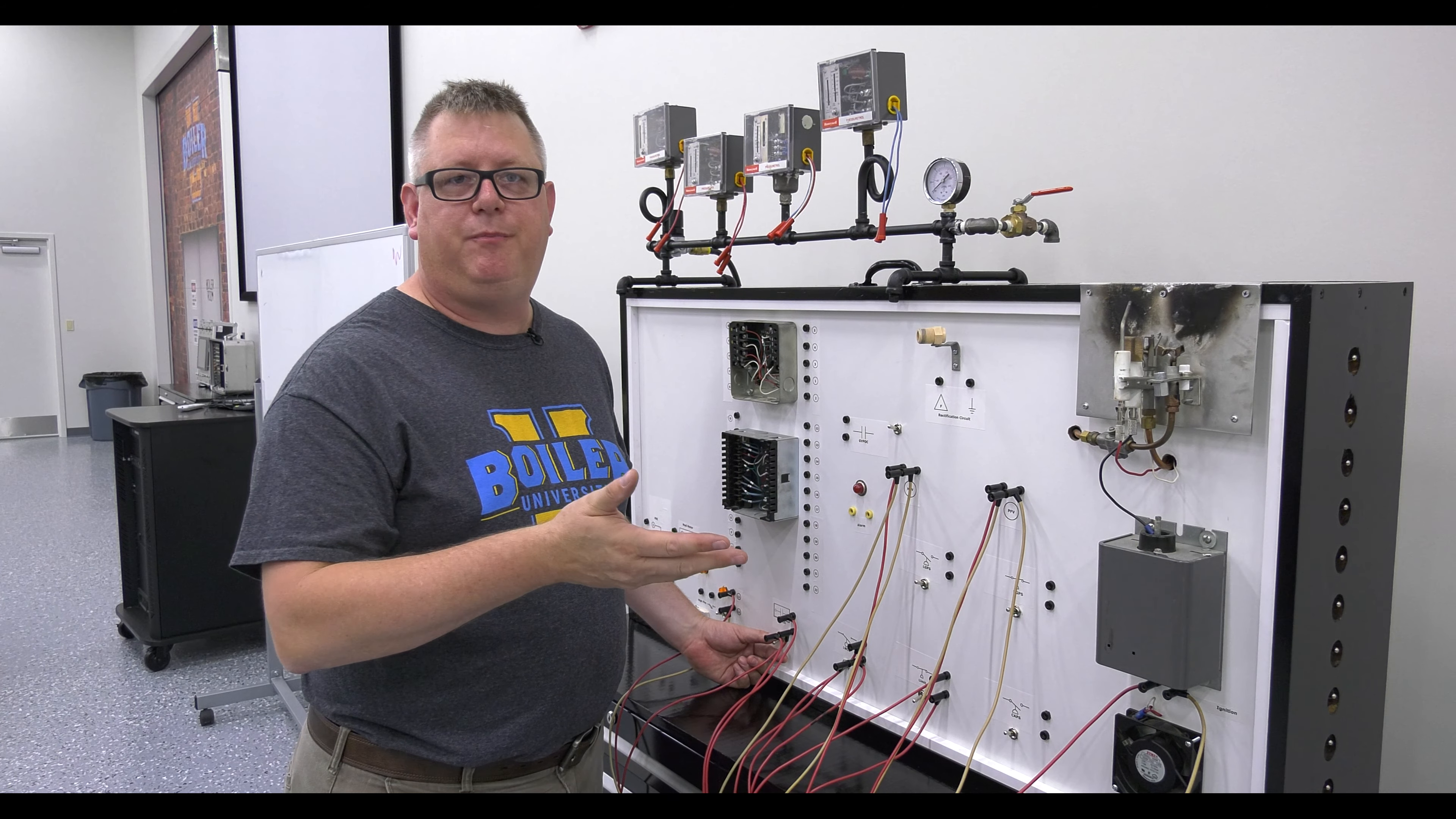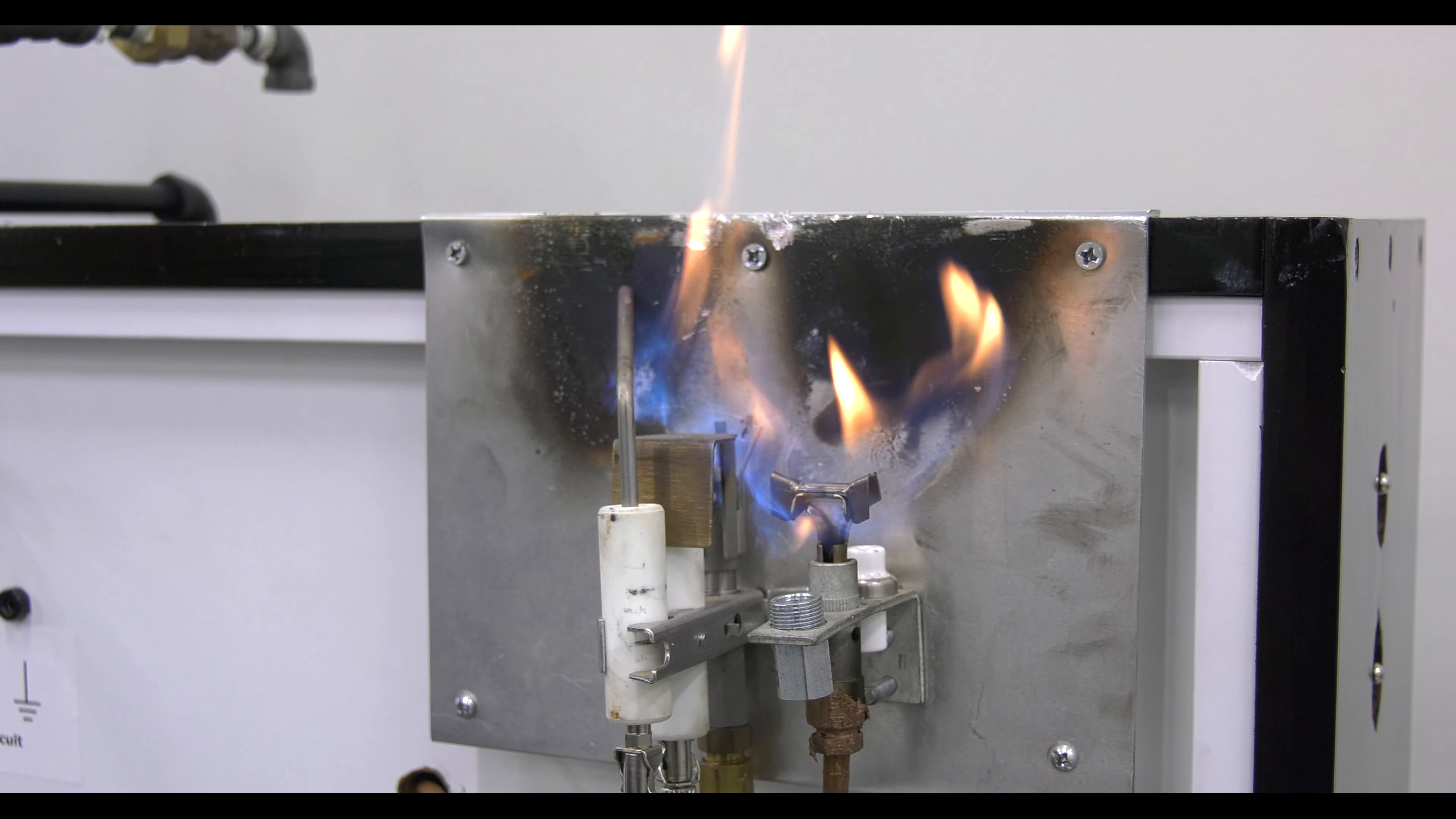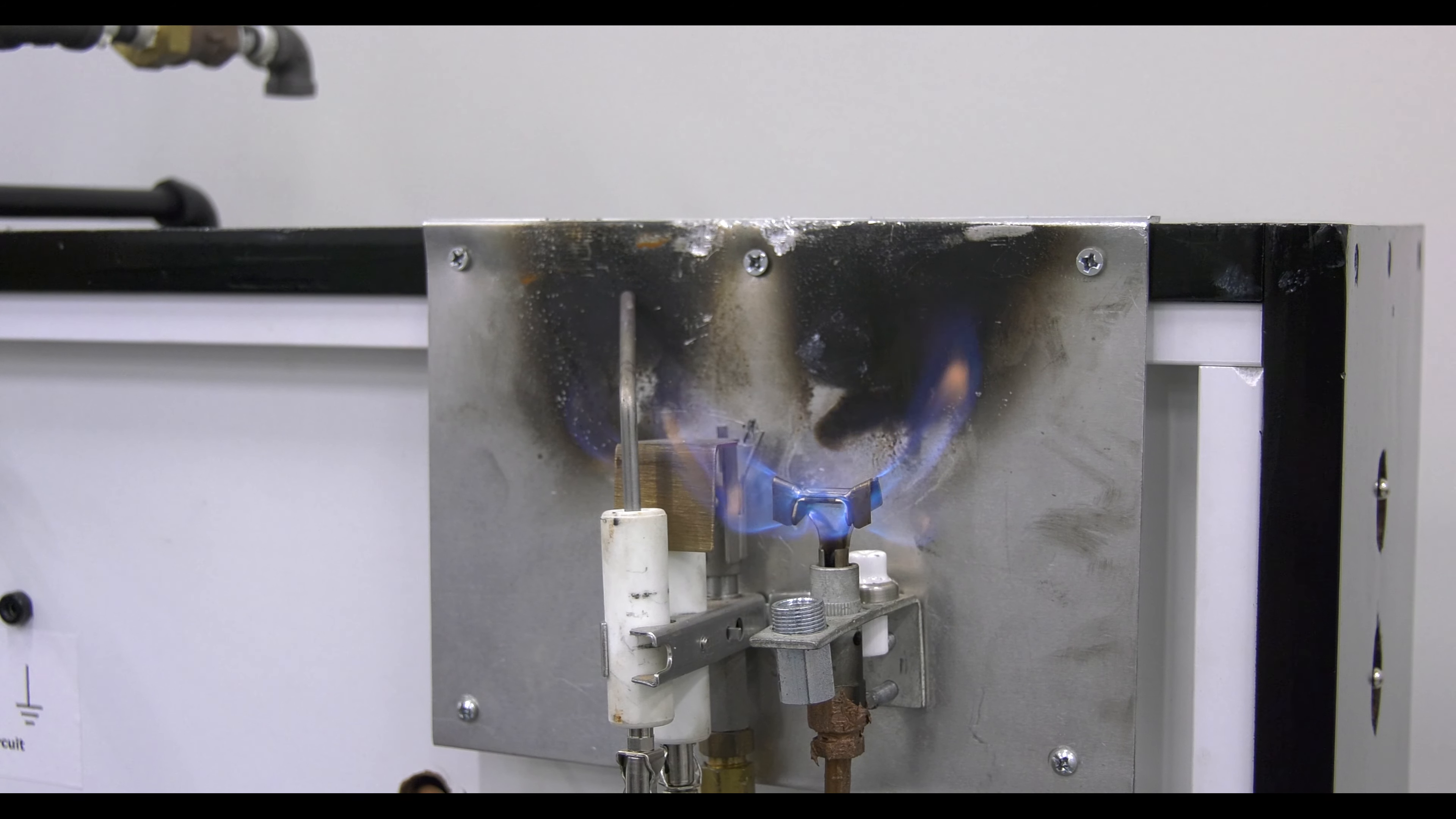The second type of pilot is an interrupted pilot. On our light off sequence we'll get spark, we'll get pilot, then we'll get main, and then once that's proven our spark and pilot will extinguish. So we're proving the main flame on its own. That's an interrupted pilot.